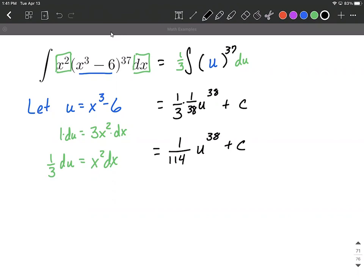But right now we're in terms of u. We want to get this back in terms of x because our original function had x's. So what we can do is we can use that let statement that we began with and put one over 114, and then instead of u being raised to the 38th power we can substitute back in with x cubed minus six is going to be raised to the 38th power in our final answer.